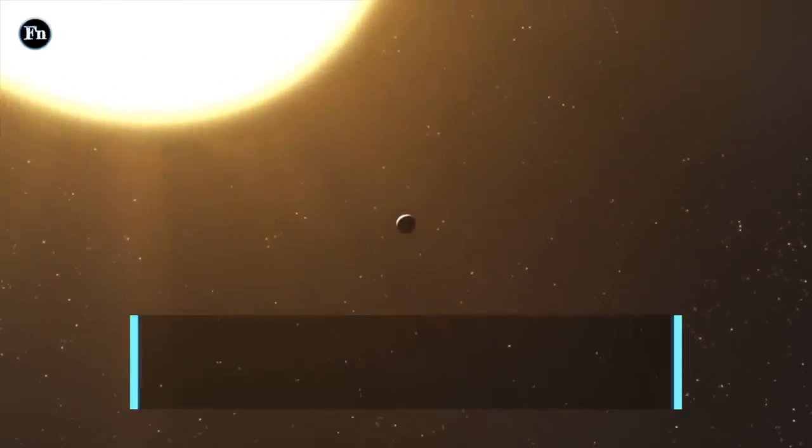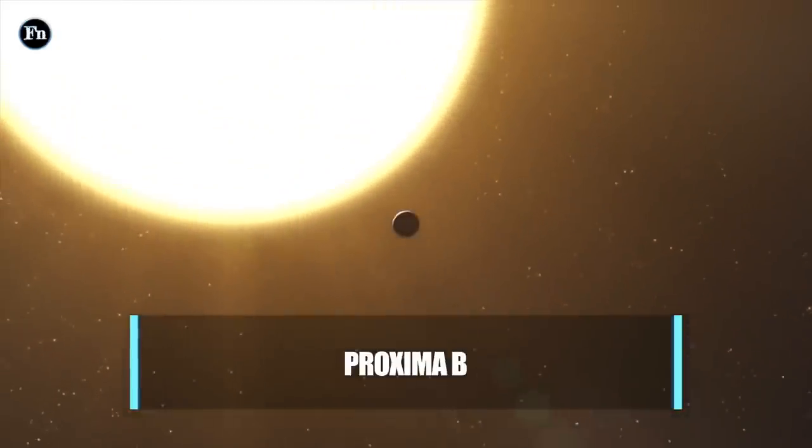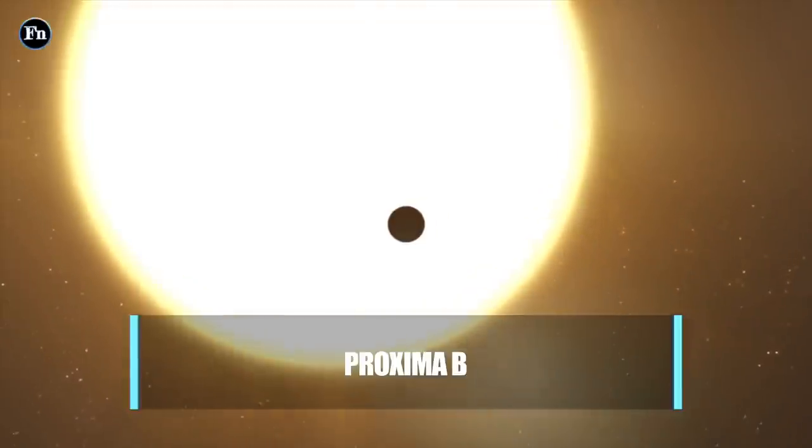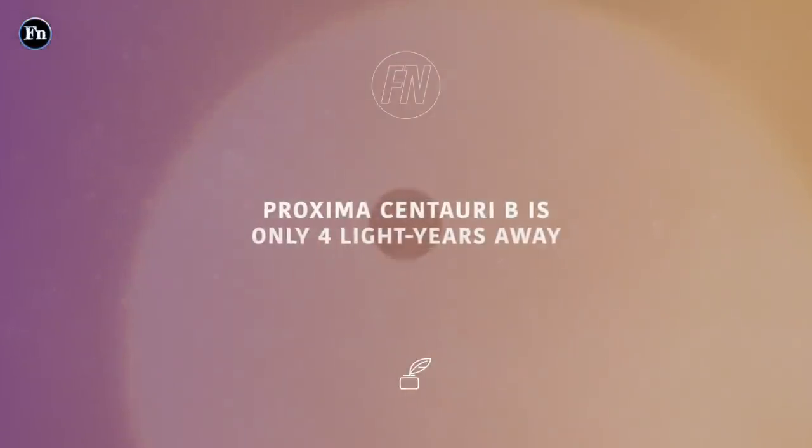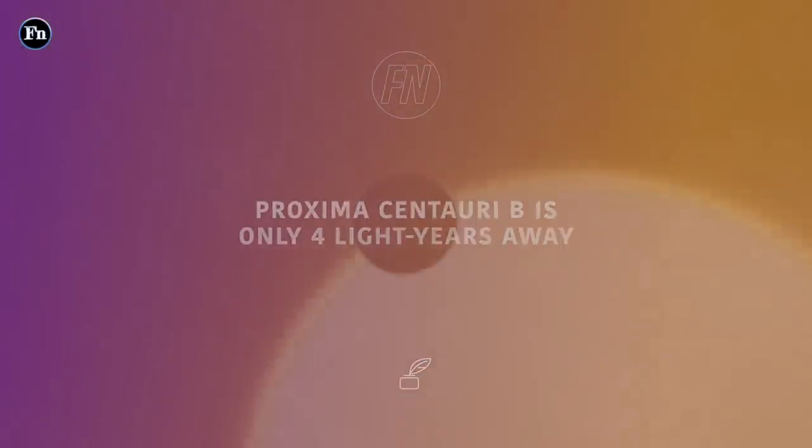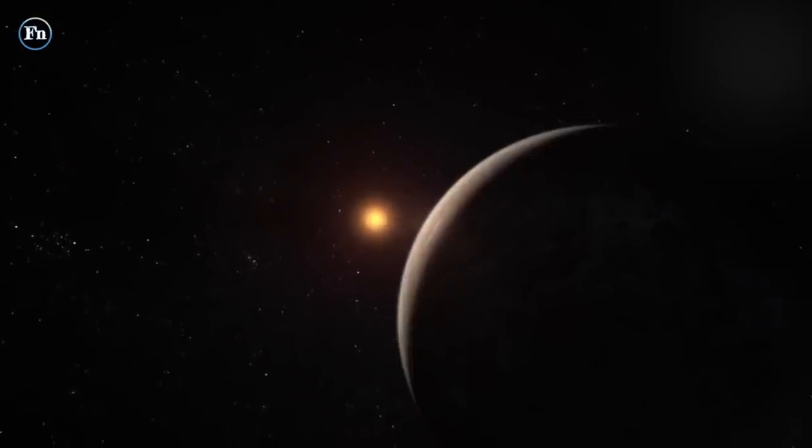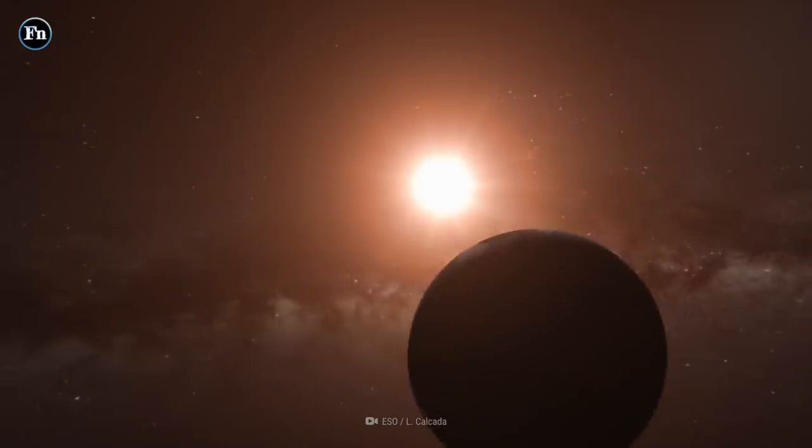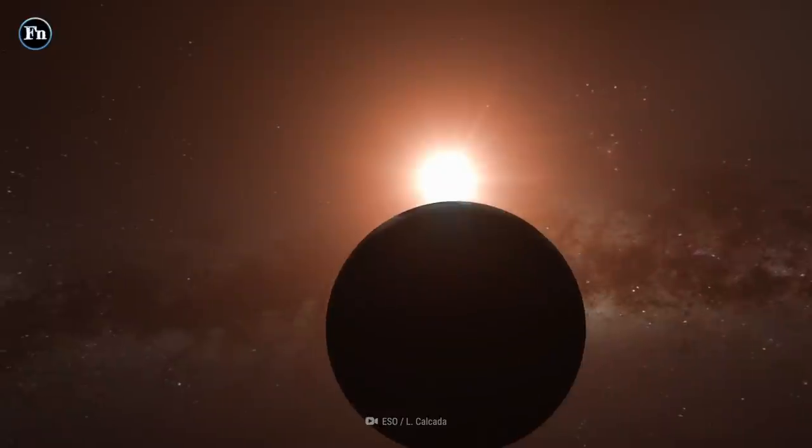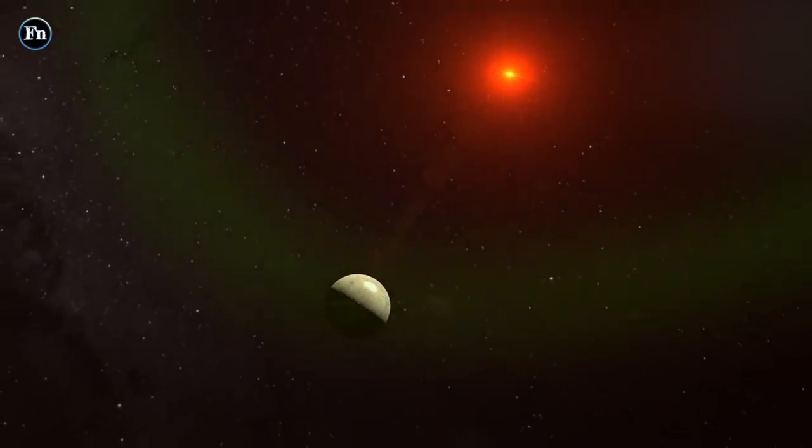Number 2: Proxima b. Meet our closest known exoplanet neighbor. Proxima Centauri b is only four light-years away. It's a super-Earth exoplanet that orbits an M-type star. Its mass is 1.27 Earths and it takes 11.2 days to complete one orbit of its star.